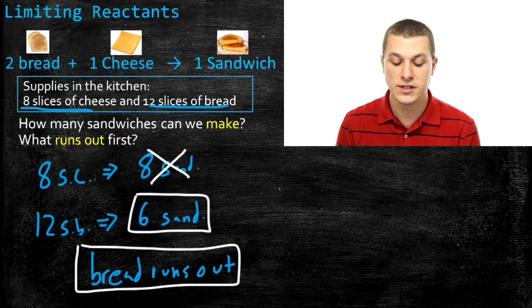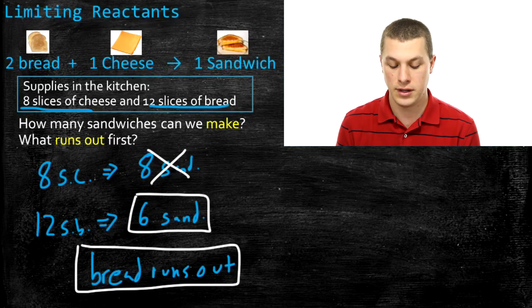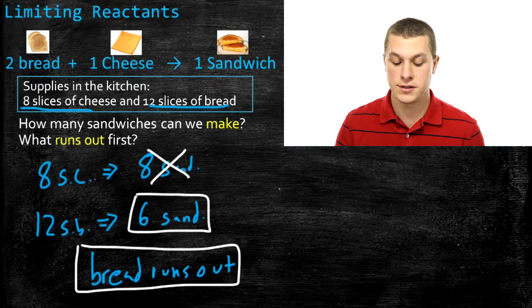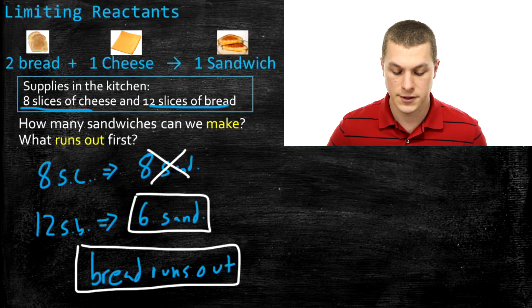We'll use these terms throughout the video: theoretical yield means the amount of product we can make if everything goes perfectly, and limiting reactant means the thing that runs out first. Now let's apply the same process to a chemical reaction.